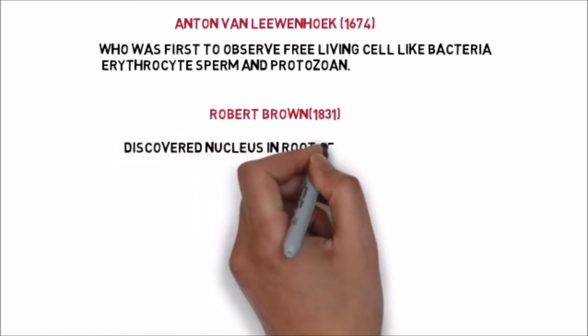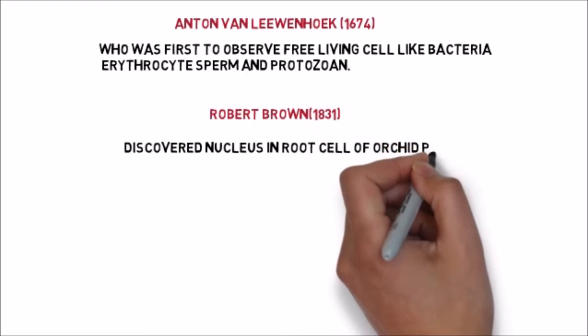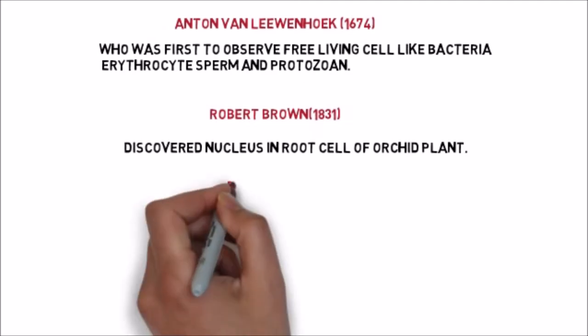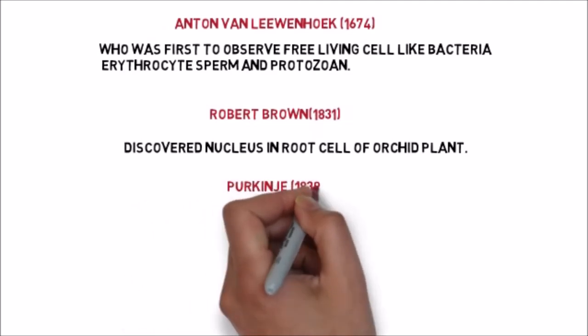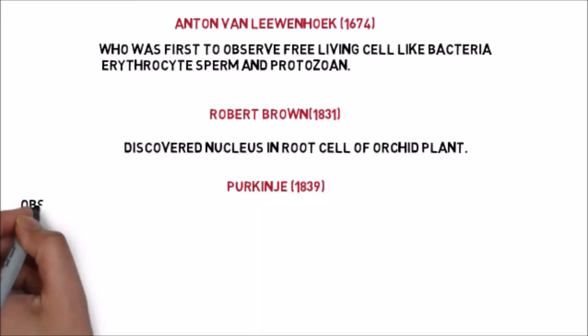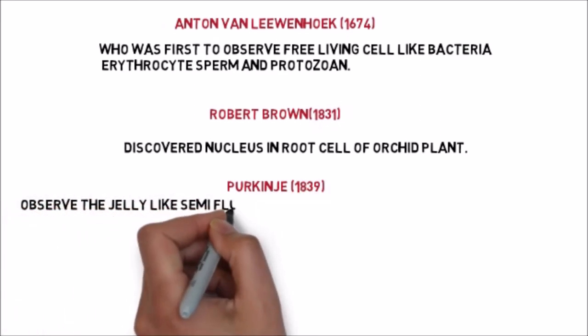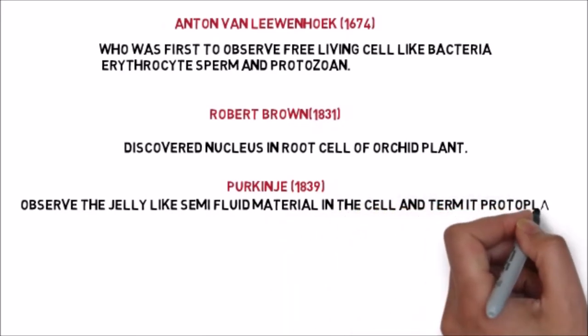After that came Robert Brown in 1831. He discovered the nucleus in root cells of the orchid plant. While studying the orchid plant, he observed a dense structure inside the cell which he named nucleus. After that came Purkinje in 1839, who named the semi-fluid material inside the cell 'protoplasm'.